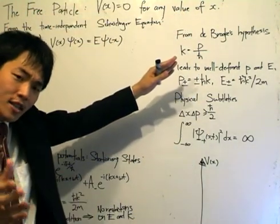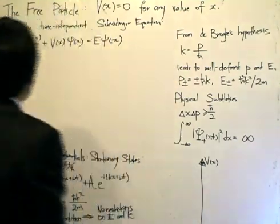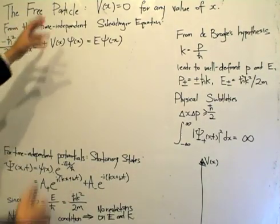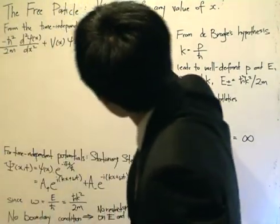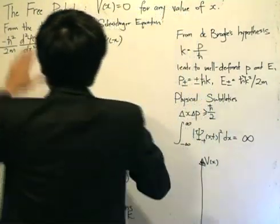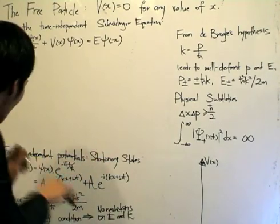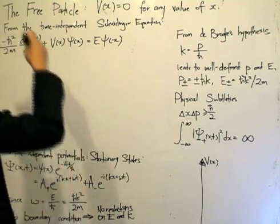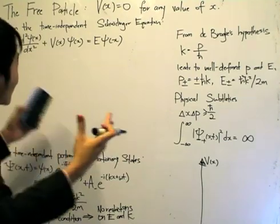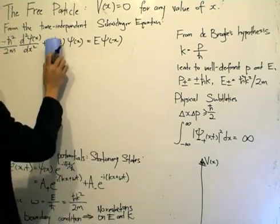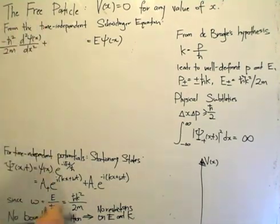Remember, the time-independent Schrödinger equation — we get the wave function and then multiply by the time-evolutionary operator. The Schrödinger equation, or the time-independent Schrödinger equation, is given by this expression. For a free particle, the potential is zero — there is no potential in the position space — so the potential term gets eliminated, and we are left with solving the remaining equation.